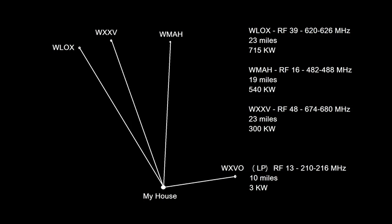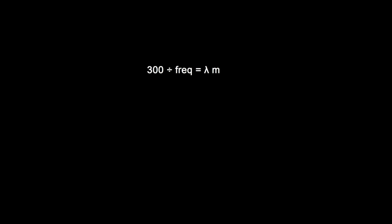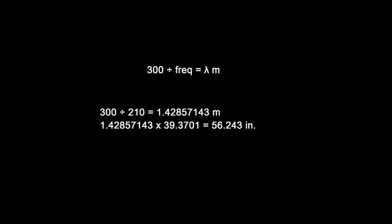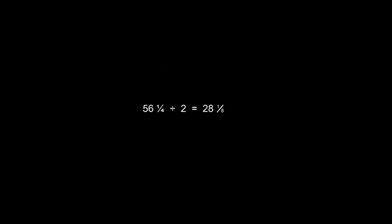First, I'll need to determine the frequency wavelength with this formula: 300 divided by the frequency equals wavelength in meters. And since I'm using standard measurements such as inches, then wavelength in meters times 39.3701 equals the wavelength in inches. Now WXVO transmits between 210 and 216 MHz. I'm going to use the low number, so 300 divided by 210 equals a wavelength of 1.42857143 meters. Then I'll multiply that by 39.3701 to get 56.243 inches, round it up to 56 and a quarter inches, then cut that in half to 28 and an eighth of an inch.